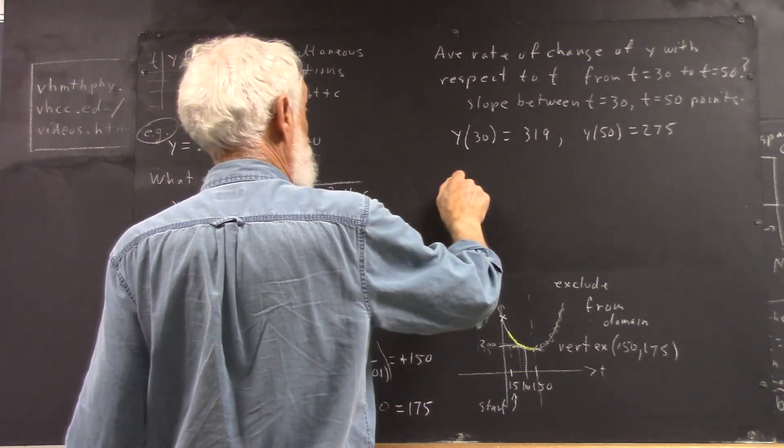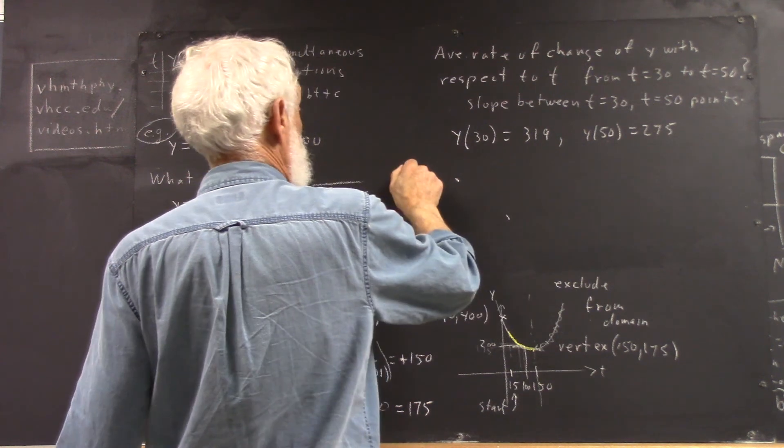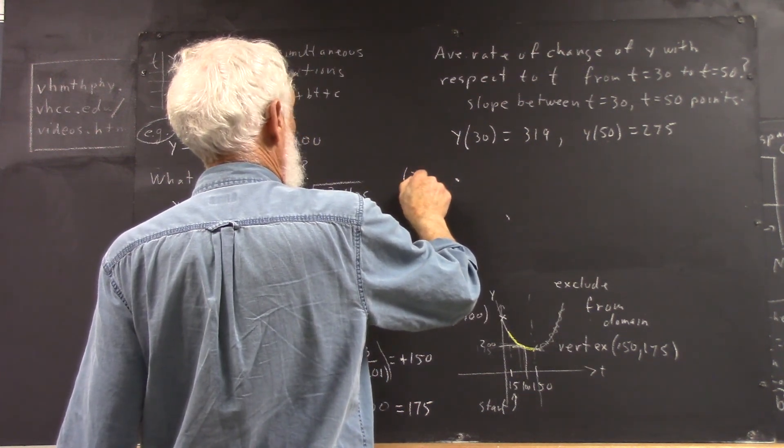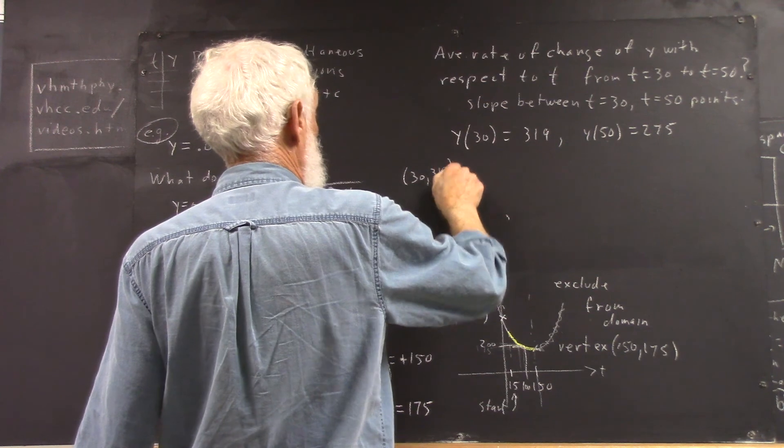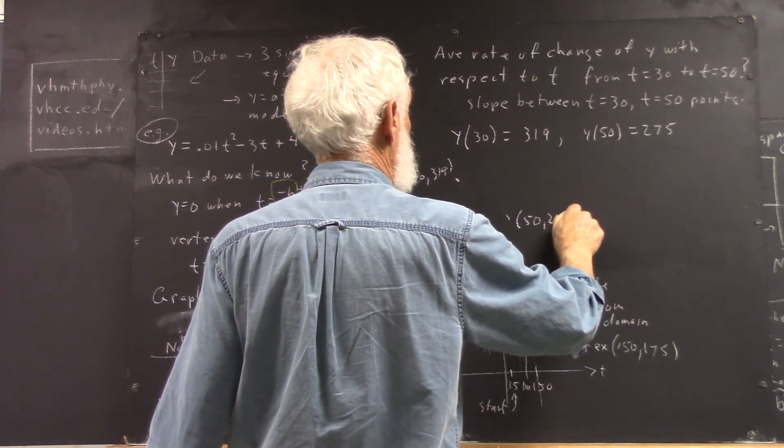Meaning that we have two graph points. Okay, the point 30, 319, the point 50, 275.